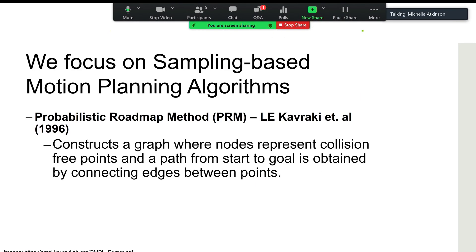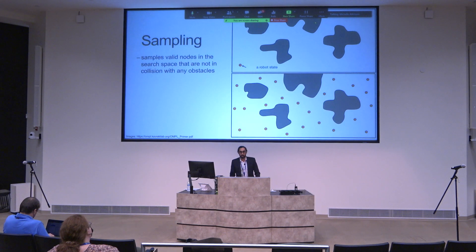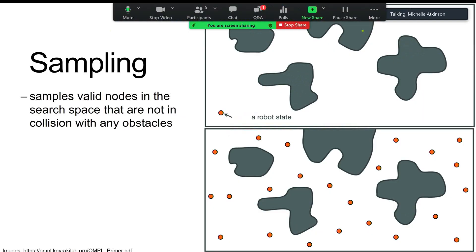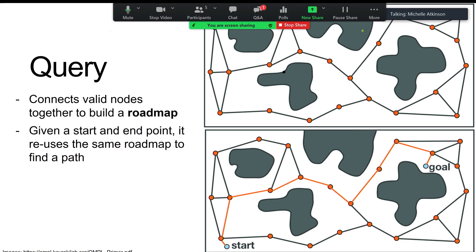Robotic motion planners come in a wide variety of flavors. We're going to focus on the sampling-based motion planning algorithm. The landmark example is the Probabilistic Roadmap (PRM) algorithm developed in 1996 by Dr. Lydia Kavraki, who happens to be my PI on this project. It works in two steps: first, sampling — the robot picks nodes in the search space and adds collision-free ones to the map. Second, the query phase — given a start and goal point, it finds a path through the roadmap. Once built, the roadmap can be reused for different start and goal points.